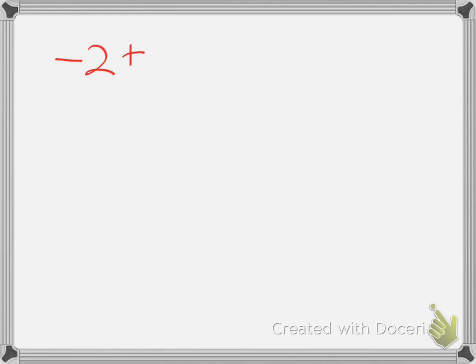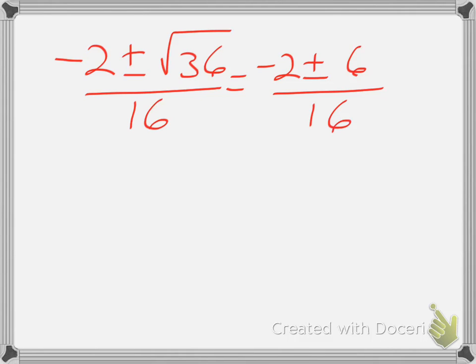So again, I have negative 2 plus or minus the square root of 36 over 16. I will continue to simplify, make this negative 2 plus or minus 6 over 16.